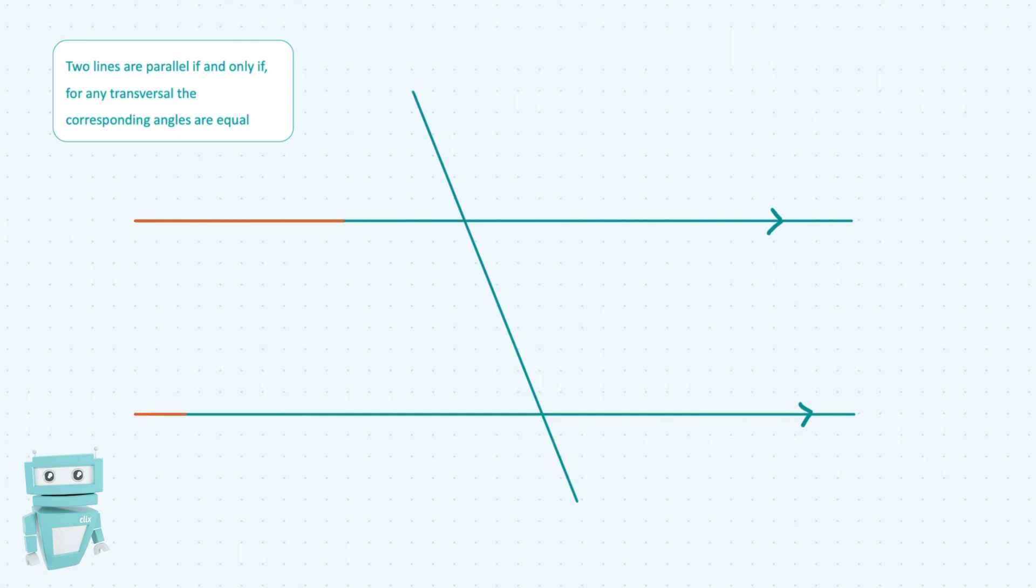We know these two lines that are running horizontally are parallel because they've got arrows on them, which is just a useful thing to know. If they have arrows like I've drawn on these lines, they're considered parallel, although usually it's pretty obvious.